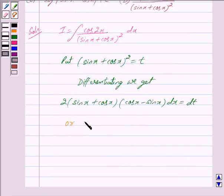We can write this as 2 times cos square x minus sin square x dx equals dt, because we know that a minus b times a plus b equals a square minus b square.